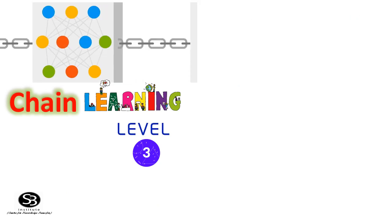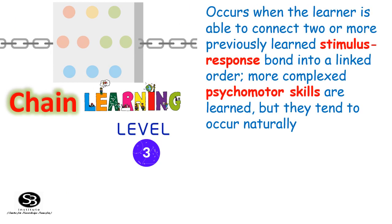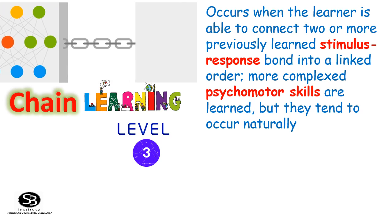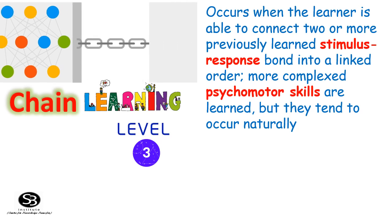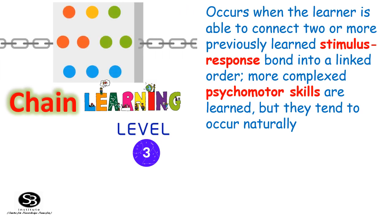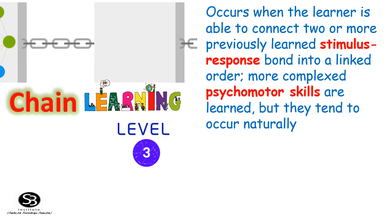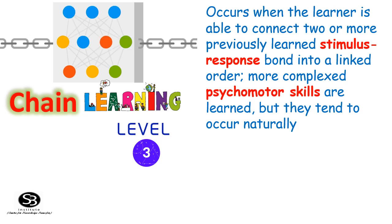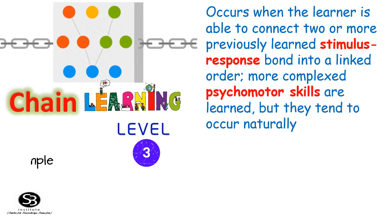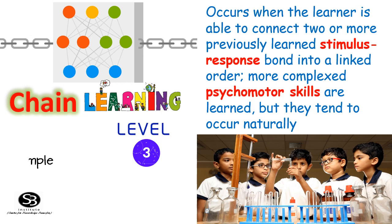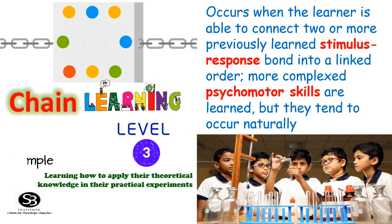Chain Learning occurs when the learner is able to connect two or more previously learned stimulus-response bonds into a linked order. More complex psychomotor skills are learned, but they tend to occur naturally. For example, learning how to apply theoretical knowledge in practical experiments.